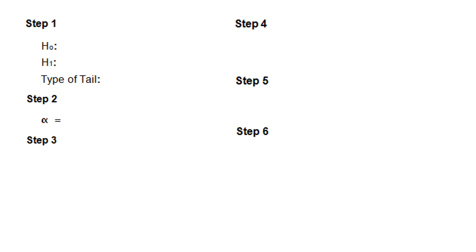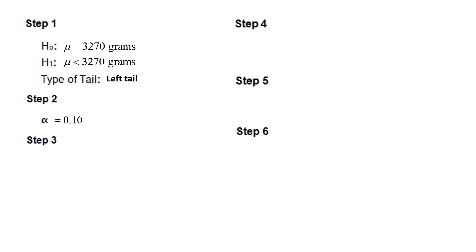Step one — null and alternative: since this is a mean, the parameter is mu. We assume the population mean weight is 3270 grams, so H0: mu = 3270. The claim — the alternative — is that it is lower, so H1: mu < 3270 grams. This is a left-tail test. Step two: alpha = 0.10.